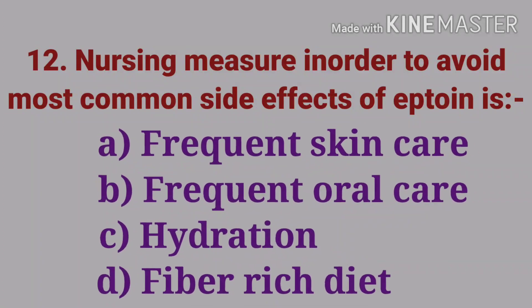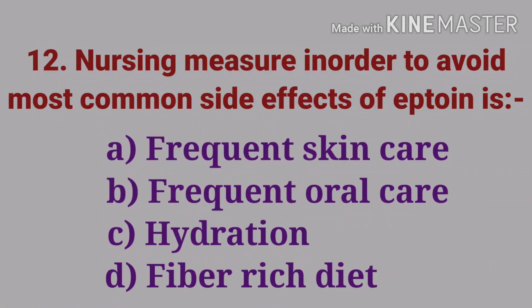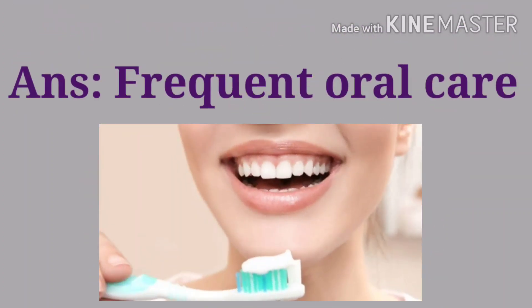The twelfth question: the nursing measure to avoid the most common side effect of Dilantin (Phenytoin) — options are frequent skin care, frequent oral care, hydration, and fiber-rich food. The answer is frequent oral care. Dilantin is Phenytoin; the common adverse drug reaction is gingival hyperplasia, so oral hygiene is important in patients on Phenytoin.